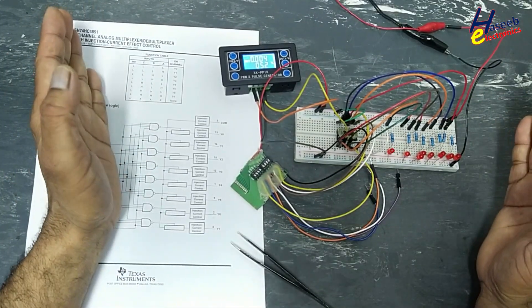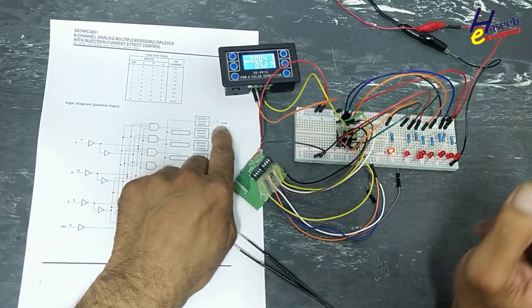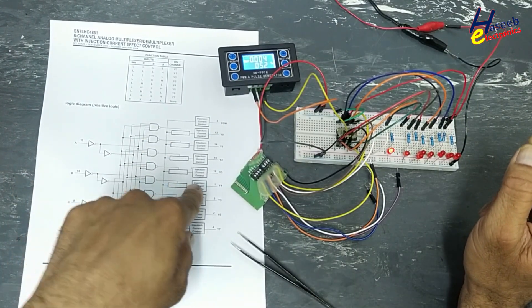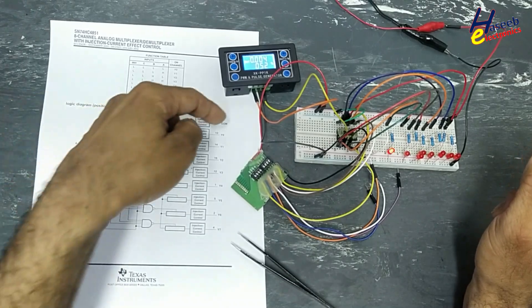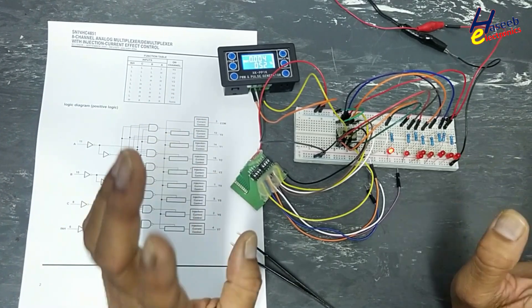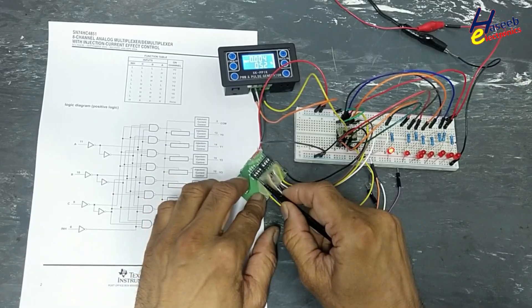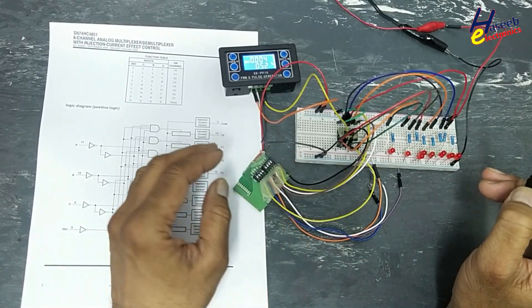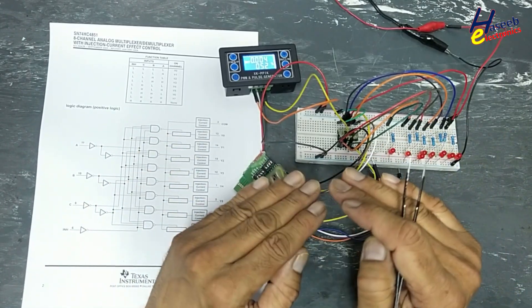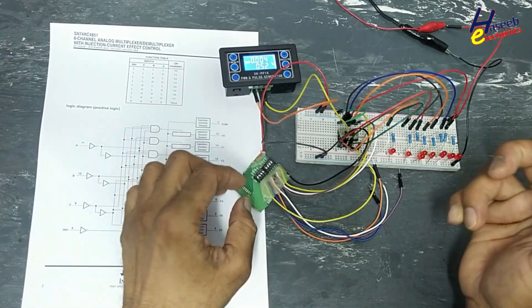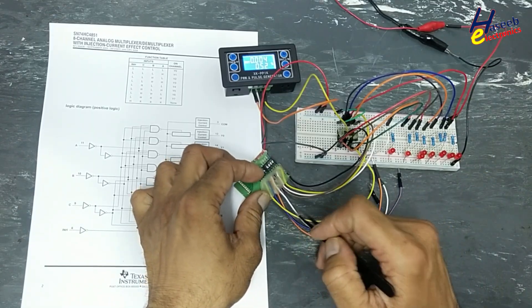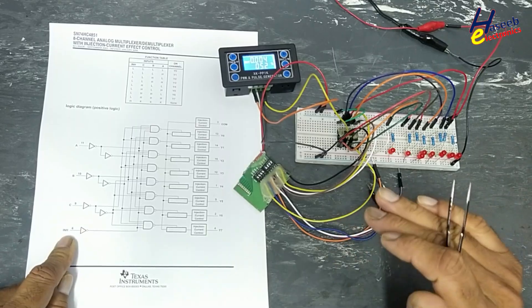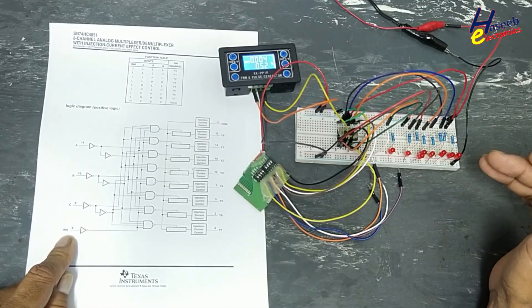So this is the demultiplexer function. We provided a signal here at pin number three, we select the channel by this address, and that signal is reaching at that pin. If the inhibit signal is high, this IC is in off state. It is not working. We can say it is chip-enabled signal. When inhibit signal pin number six is low, zero volt, the IC is working.